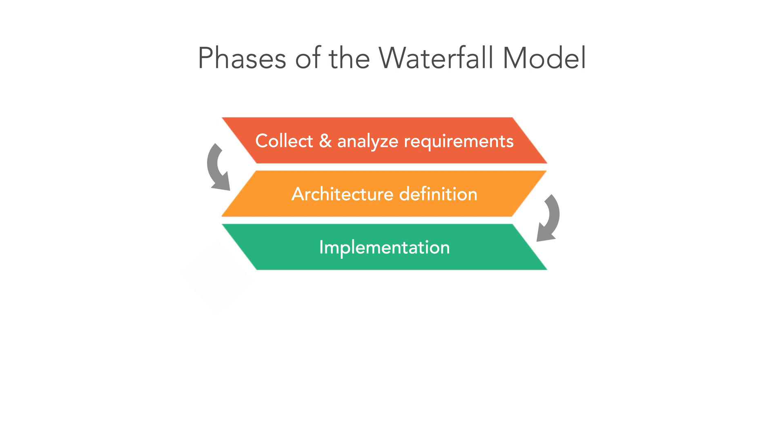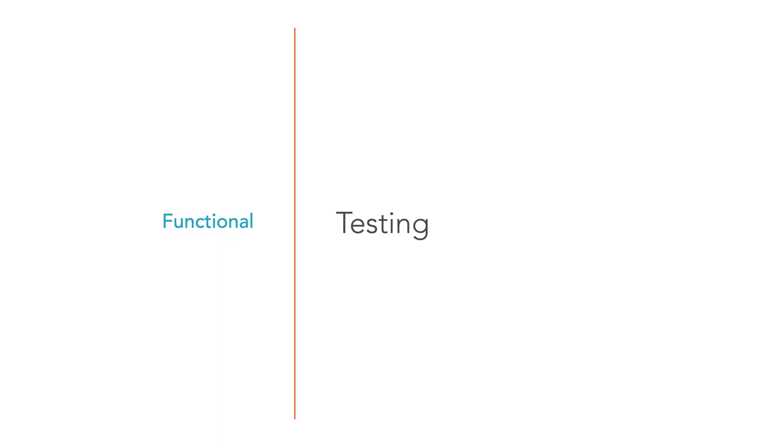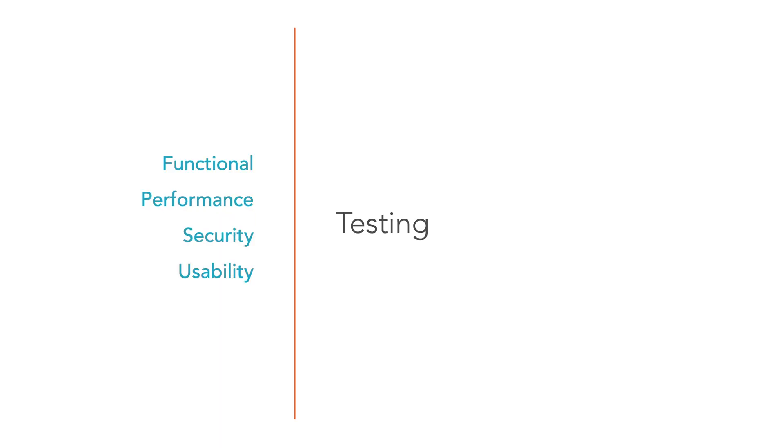Once the development phase is completed, the product undergoes the verification phase. During this step, the software is evaluated based on predefined criteria. We must check whether the product provides the functionality we agreed on. Tests are executed to ensure that the software works as expected. We test for functional, performance, security, and usability issues. Detected problems are recorded and fixed. The process goes on until all severe bugs are fixed.